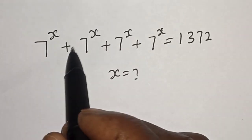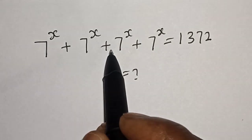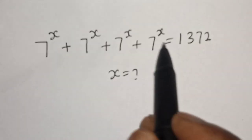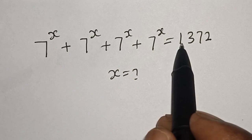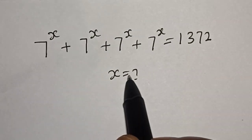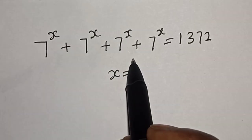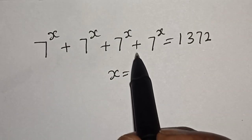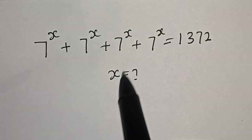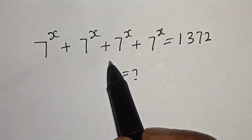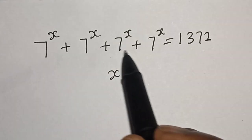7 raised to power s plus 7 raised to power s plus 7 raised to power s plus 7 raised to power s is equal to 1372. What is the value of s? Hi everyone, welcome to my class. In this class we want to find the value of s from this given equation.